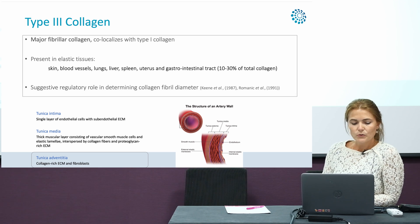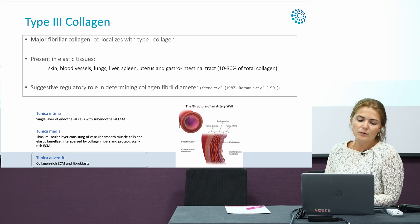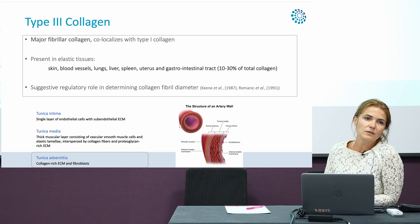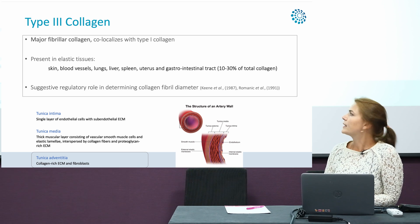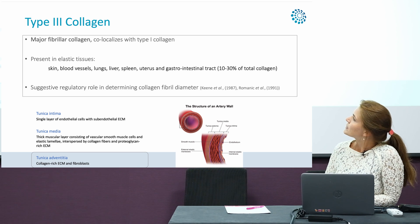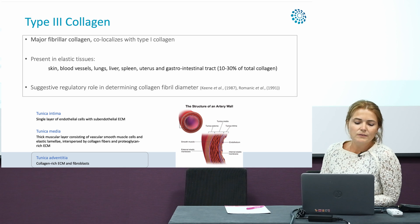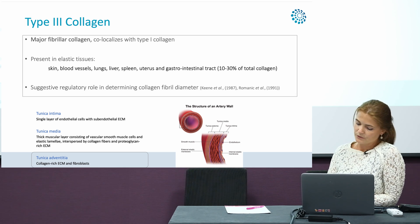Not that much is actually known about the exact role of type 3 collagen in the extracellular matrix, but a few old studies, mainly electron microscopy studies, have suggested a regulatory role in determining the collagen fibril diameter.